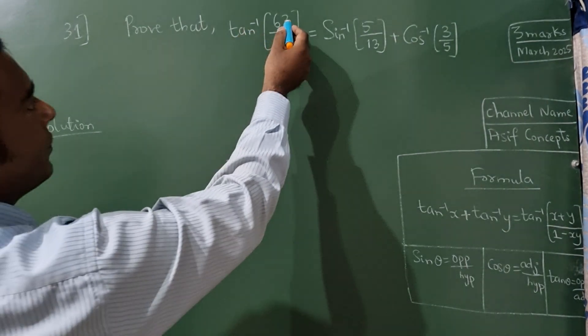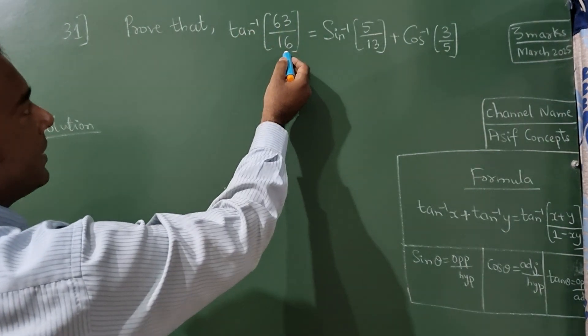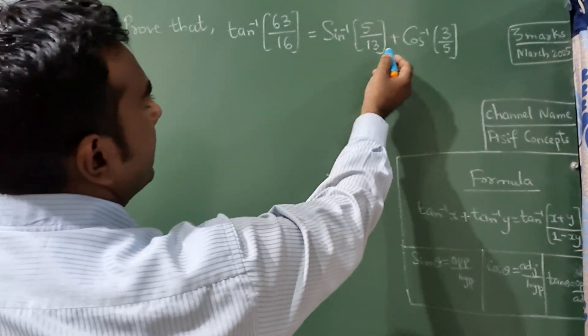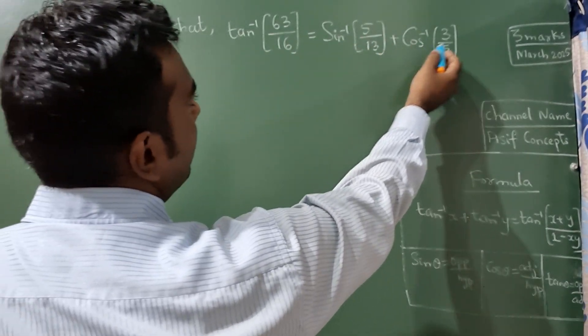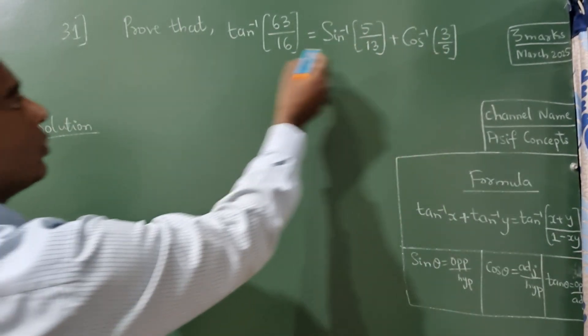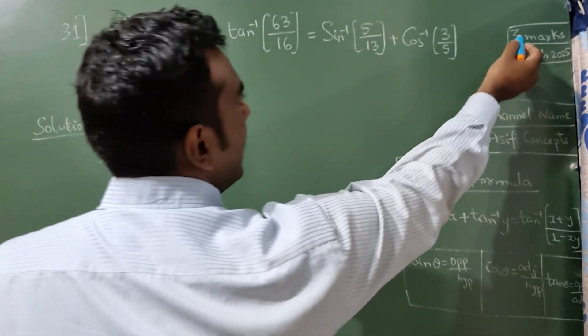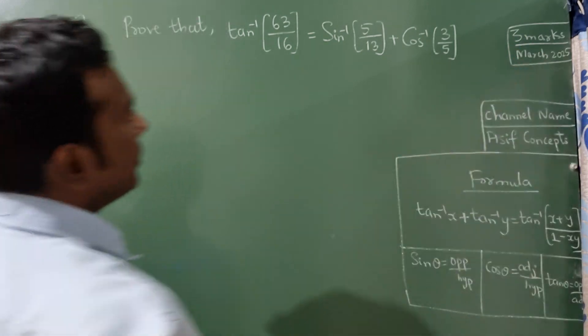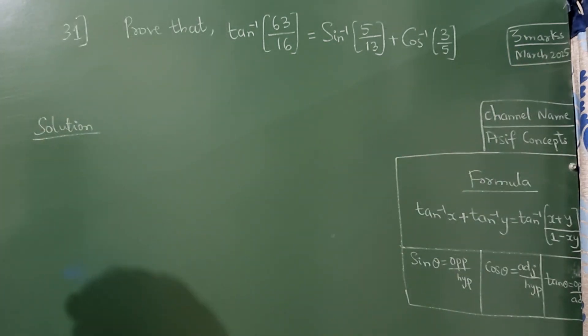Prove that tan inverse of 63 by 16 is equal to sin inverse of 5 by 13 plus cos inverse of 3 by 5. This question was asked for three marks in the March 2025 exam.